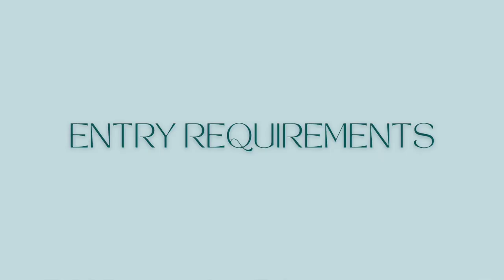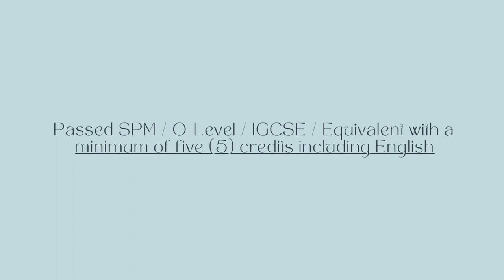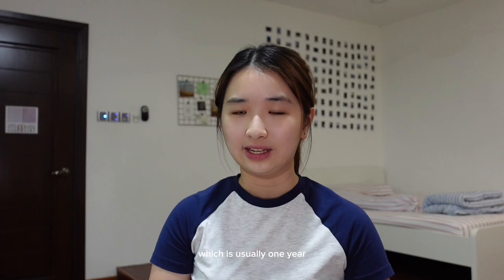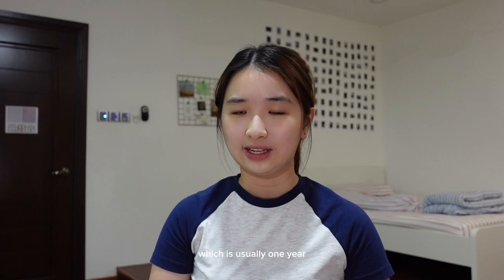What are the entry requirements to AUSMAT? You will need to have passed SPM, O-levels, IGCSE or equivalents with a minimum of 5 credits including English. Here's the pathway: first you graduate from secondary school, then you do AUSMAT which is usually one year, and then you can go for your undergraduate degree in local or international universities.